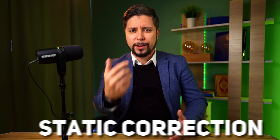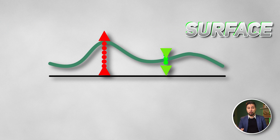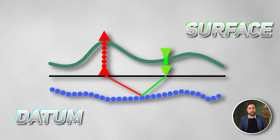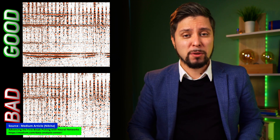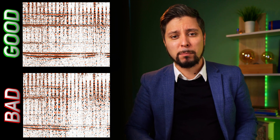First break data can be used to define static correction, which refers to a correction applied to seismic data. It accounts for the impact of near surface irregularities, such as correcting the position of source and receivers. Static correction has a significant impact on the resulted section — you can see how this section might be affected by poor first break picking.